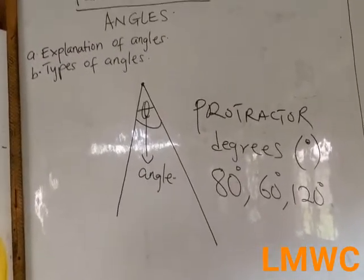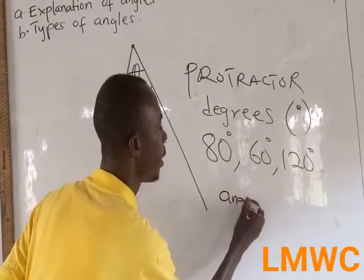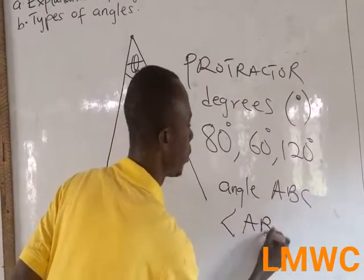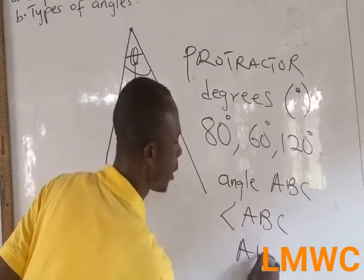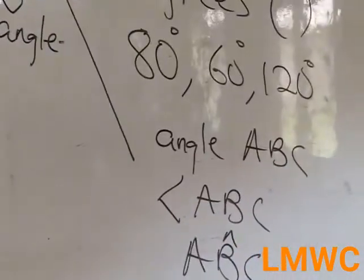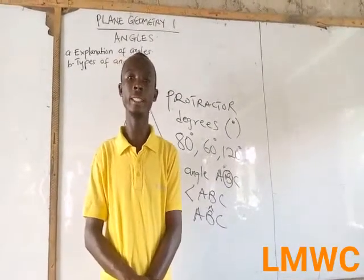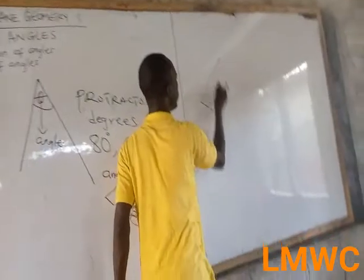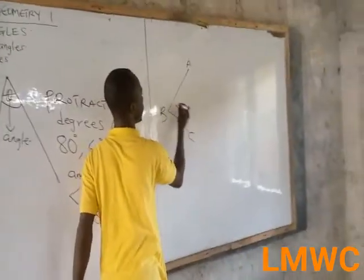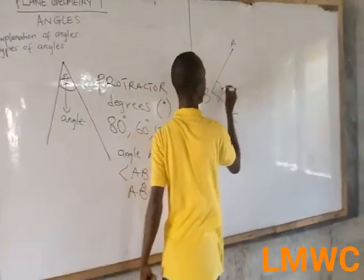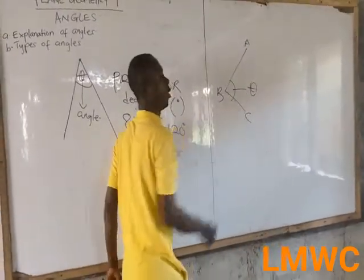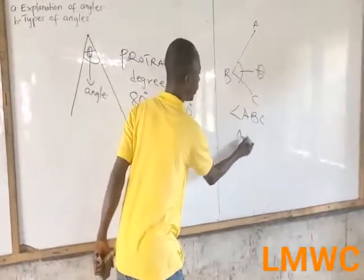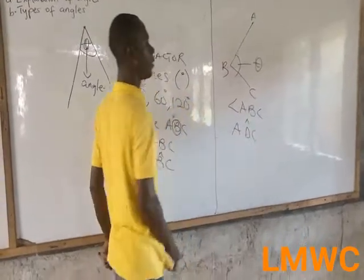Angles are represented in three main ways — either they write angle ABC, or they use other notations. The letter in the middle is where the angle is located. So if I give you A, B, C, the angle is at B. For angle A, D, C, we are talking of angle D.